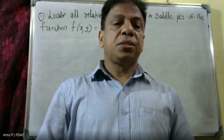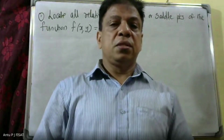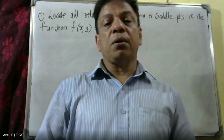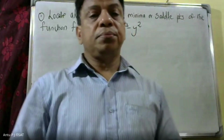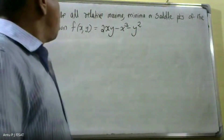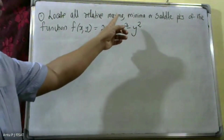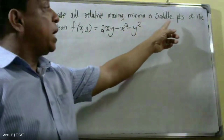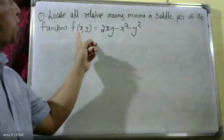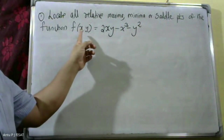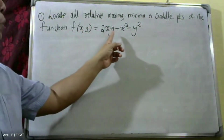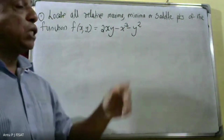Good morning students. Locate all relative maxima, minima, or saddle points of the function f(x,y) equal to 2xy minus x cubed minus y squared.